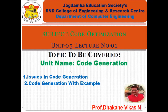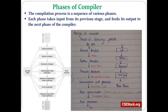Today we are starting Unit 5. In this first lecture, we are discussing code generation — the last phase of the compiler. If you see the block diagram of the compiler, the last phase is related to code generation. Today we will discuss the issues in code generation and also see the working of this last phase with an example.